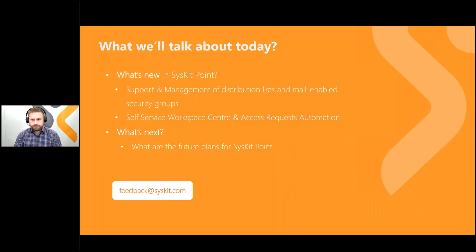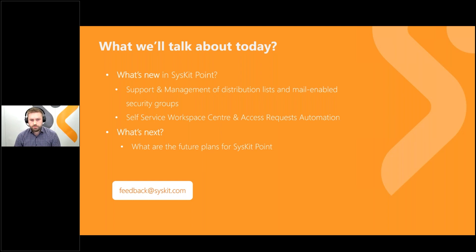Today we'll go through some of the key functionalities we have introduced in Syskit Point with our latest release. We'll first briefly go through the support and management of distribution lists and mail-enabled security groups, and then we'll dive deeper into our self-service workspace center and access request automation. At the end, we'll also go through our roadmap and give you a heads up on what's coming next.